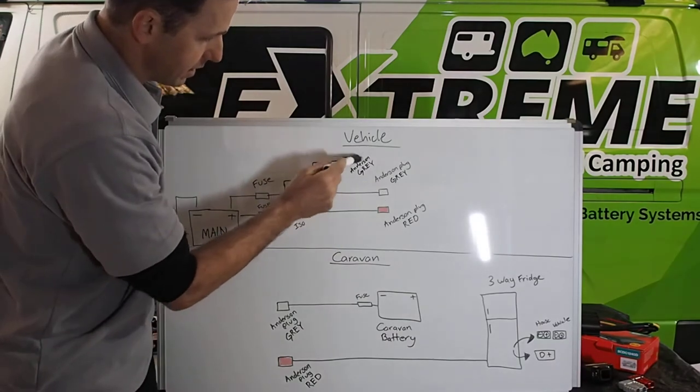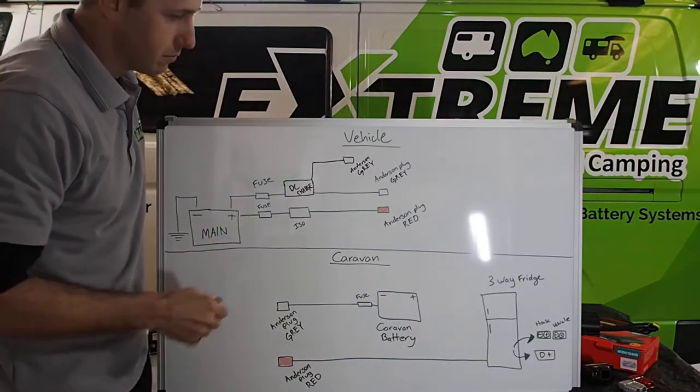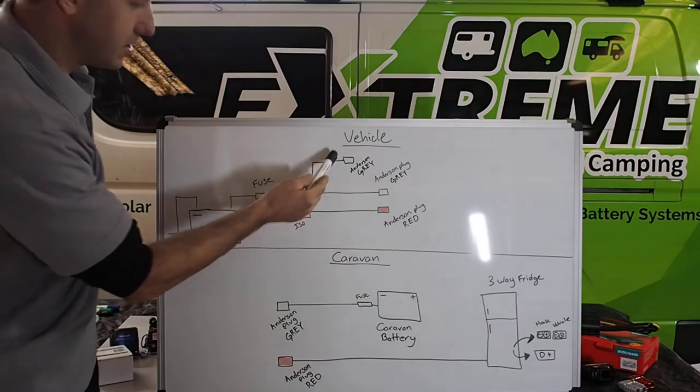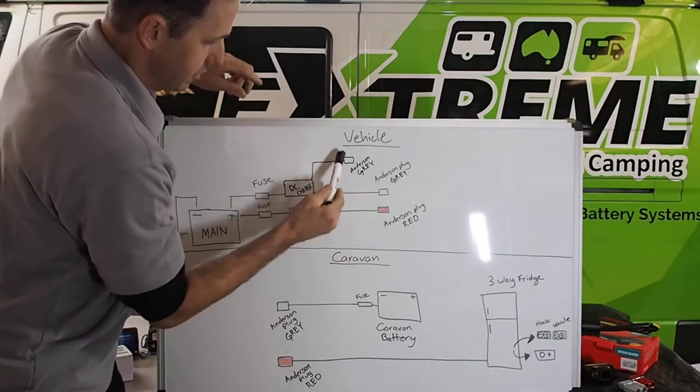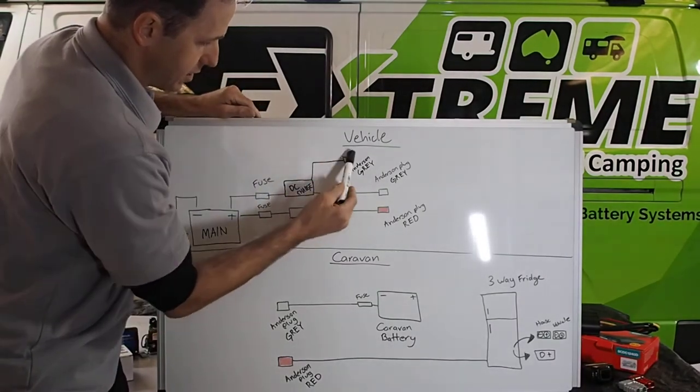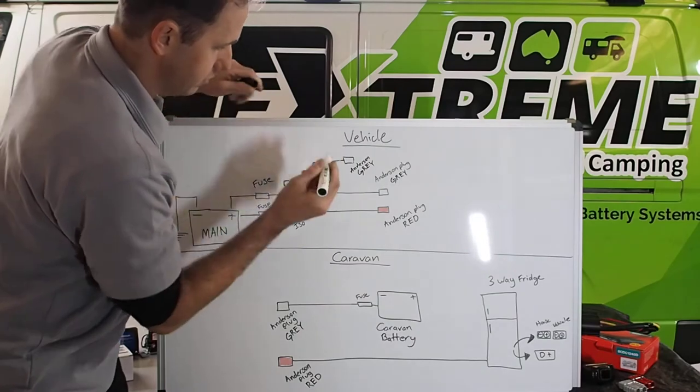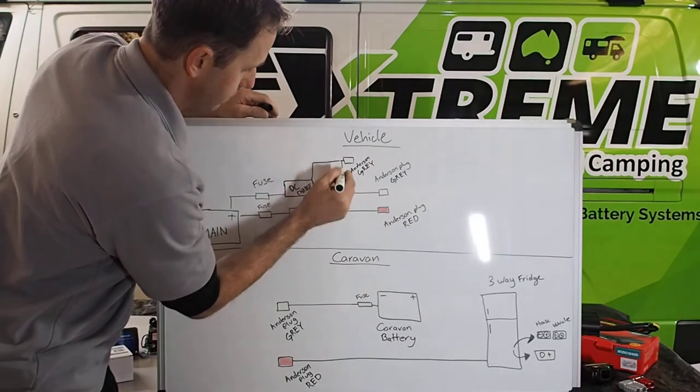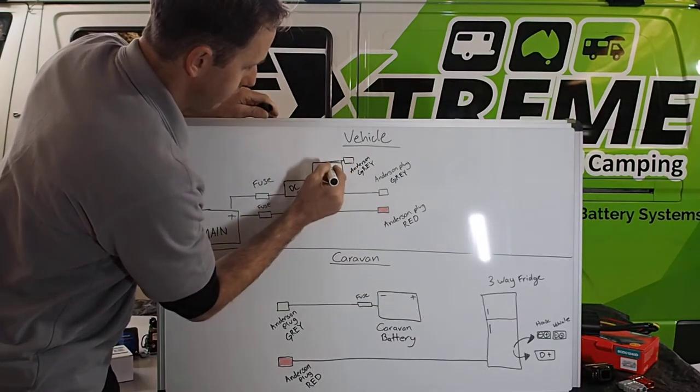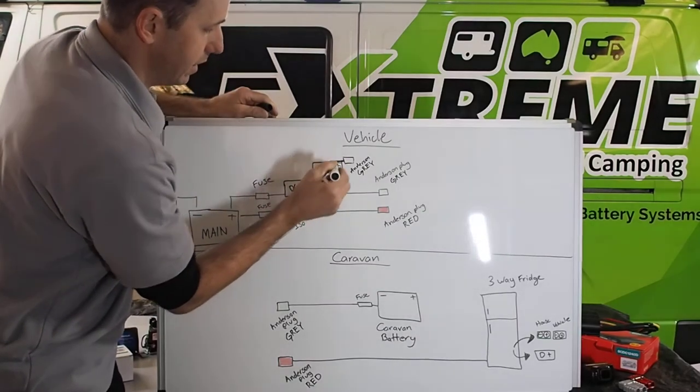Now, this Anderson plug here could be in the back of the vehicle. It could be wherever. The point is, that's an AUX battery. So, if that's charging a battery here, if that's charging a battery on that line there.